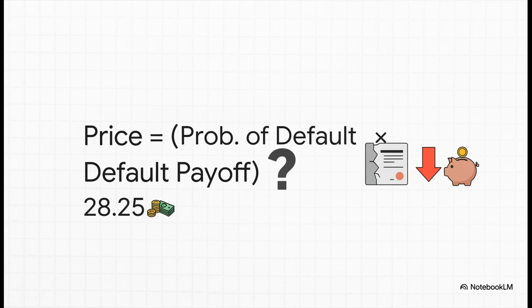Let's start building the formula. The first piece of the price comes from that default scenario. It's the probability of the default happening times the money you'd get back, which we already figured out is $28.25.